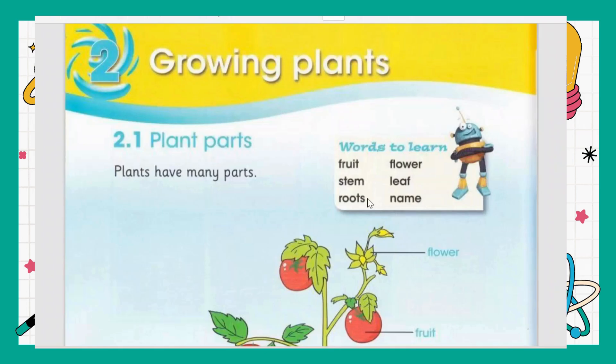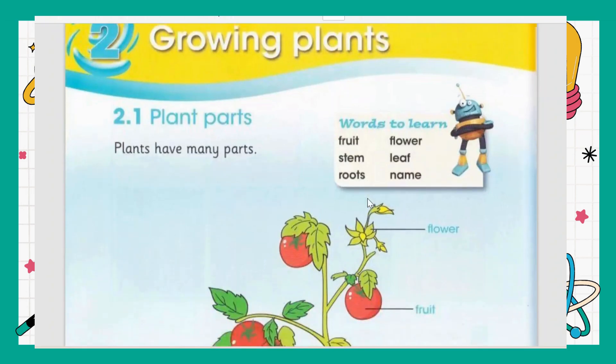Hi guys, welcome back to my channel. Today we are going to start our new chapter for grade one science. Our lesson is about growing plants. We will learn about different things about plants — how plants grow, how many parts they have, and how plants are known as living things. Let's start with their parts.